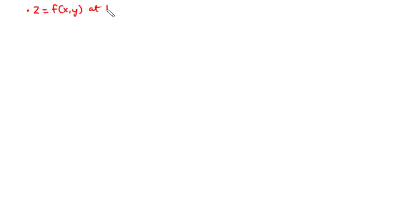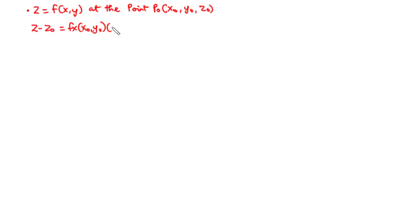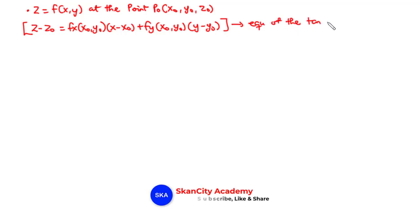we said that the equation of the tangent plane to a surface given by z equals f of xy at the point P0, which has components x0, y0, z0, is given by the expression: z minus z0 equals fx of x0, y0 times x minus x0, plus fy of x0, y0 times y minus y0. This expression gives the equation of the tangent plane to the surface z equals f of xy at the point P0.